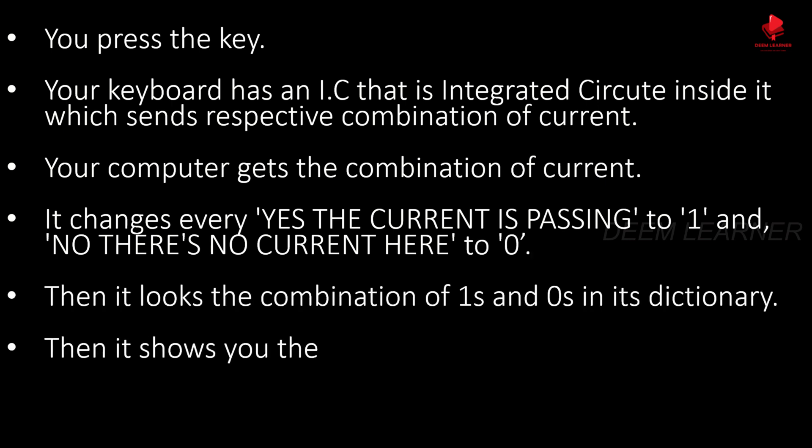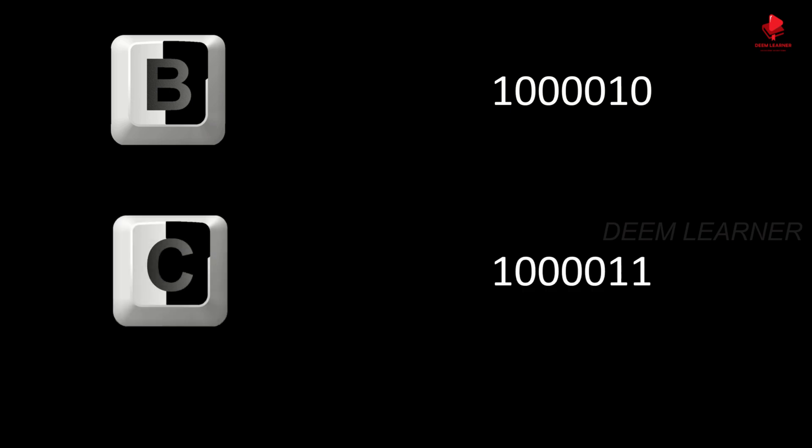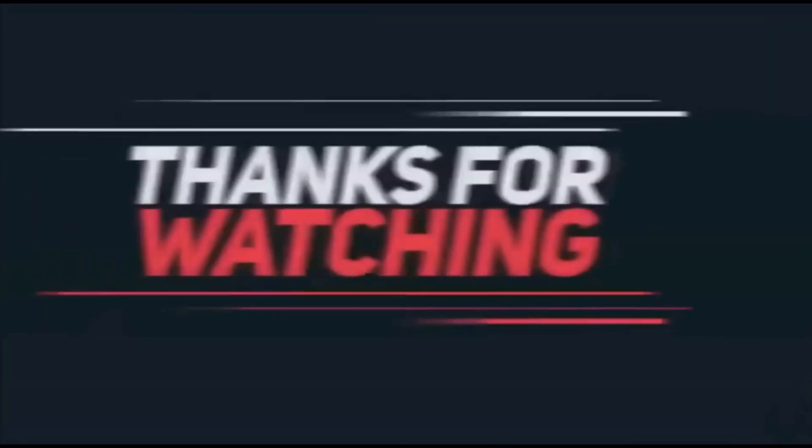Then it shows you the character whose code matches the code you just sent. That's why a computer understands binary language — the language of ones and zeros. If you press the key B, it would send the code 1000010, and for C it would be 1000011. What you're really doing is sending a code which the computer then matches in its dictionary, and to do that, you send electrical currents. Hope you've understood — any doubts, please do comment. Thank you for watching.